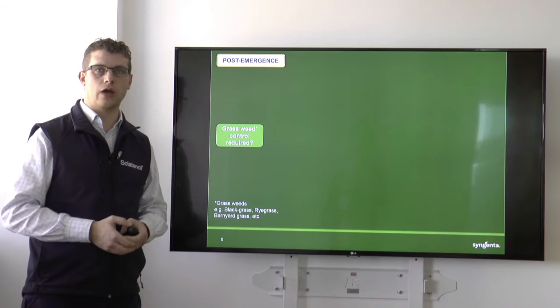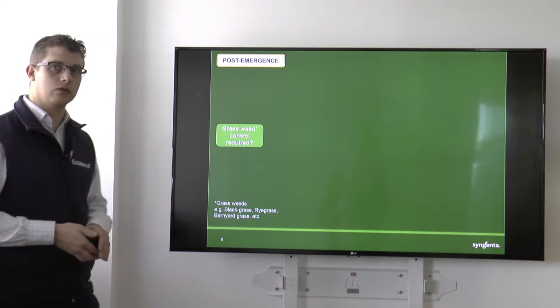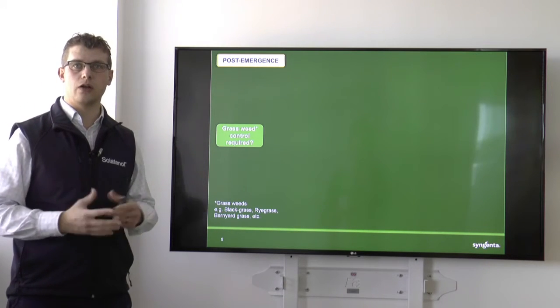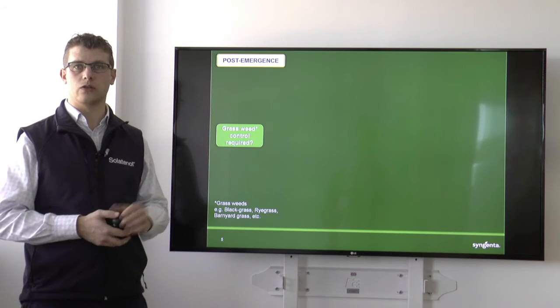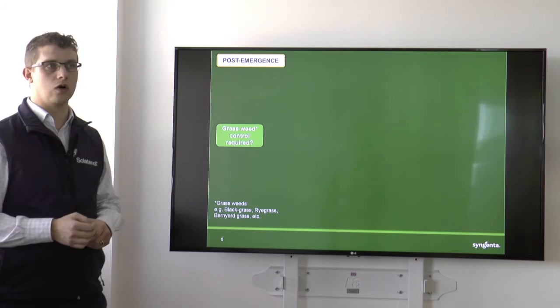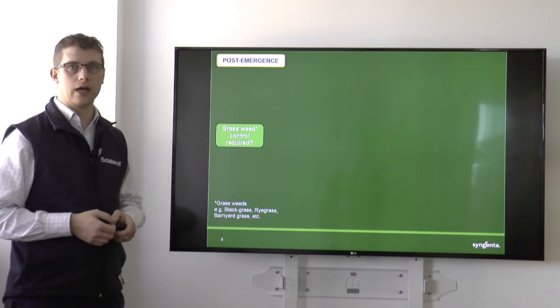Okay, so moving on to our post-emergence weed control. Obviously, in an ideal world, we want to be applying this at a 2 to 4-leaf stage, nice and early for the crop, when the weeds are at their smallest and the most sensitive, so we can get good control. We want to get that crop of maize up and away as quickly as possible.